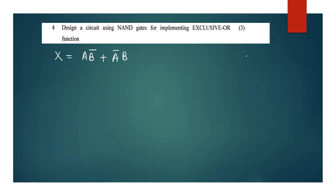If you have a NAND gate, you can apply the NAND gate to inputs A and B. The NAND gate output is (AB) complement. That is the NAND gate.